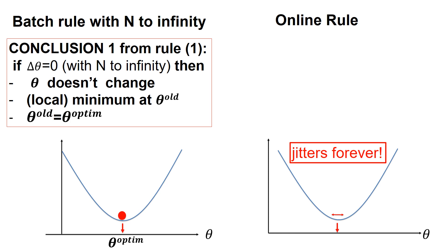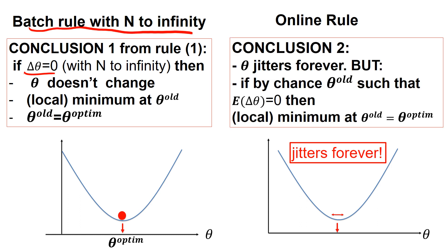On the left, consider the batch rule with N to infinity: if there's no change — delta theta equals zero — then theta doesn't change, there's a local minimum at theta old, and for N to infinity that's also the optimal local minimum. With the online rule it jitters forever. However, if theta old is such that the expectation of the update is zero, then there is a local minimum at theta old in the sense of the local optimum. The expectation can confirm it's the local optimum, but the online update steps may still kick the parameter out again; it continues to jitter forever.